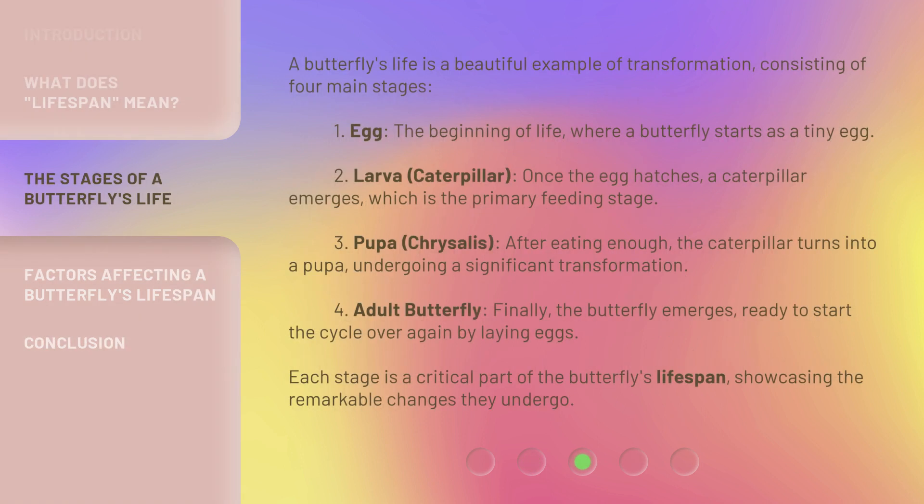A butterfly's life is a beautiful example of transformation, consisting of four main stages. First, the Egg — the beginning of life, where a butterfly starts as a tiny egg. Second, the Larva, or Caterpillar — once the egg hatches, a caterpillar emerges, which is the primary feeding stage.